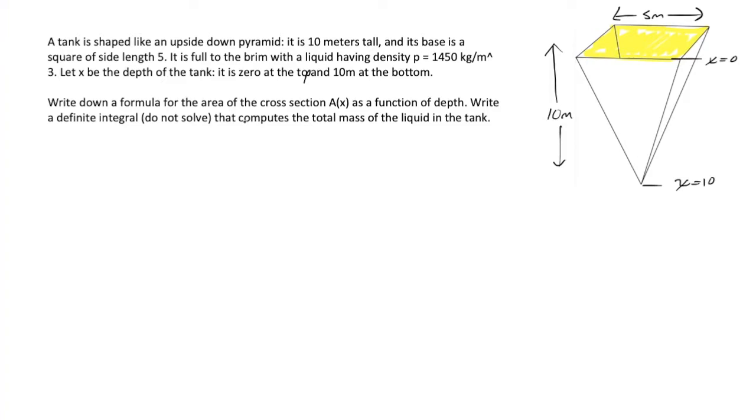The first task is to write down a formula for the area of the cross section, A(x), as a function of depth. In other words, there's a square you could make out of layers of the liquid in this container. That square shrinks as you go from here to here.